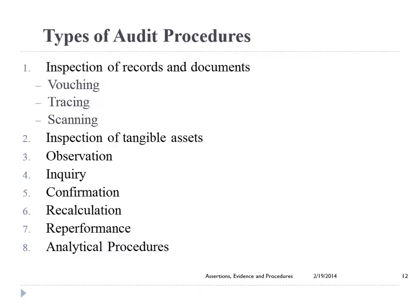So, types of audit procedures. The types of audit procedures — they're standard audit procedures — is inspection of records and documents. The client's records are external documents or internal documents when you're testing internal controls, for example.